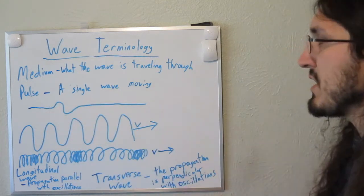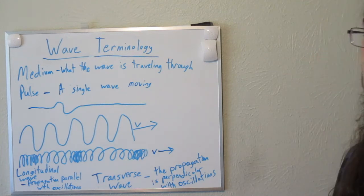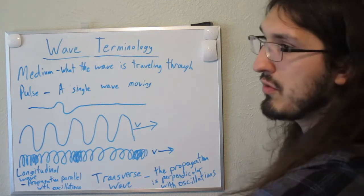You can recreate this kind of situation if you have a rope that's pulled tight, and then you yank up and down really quick, and then you'll see this kind of pulse move through the rope.